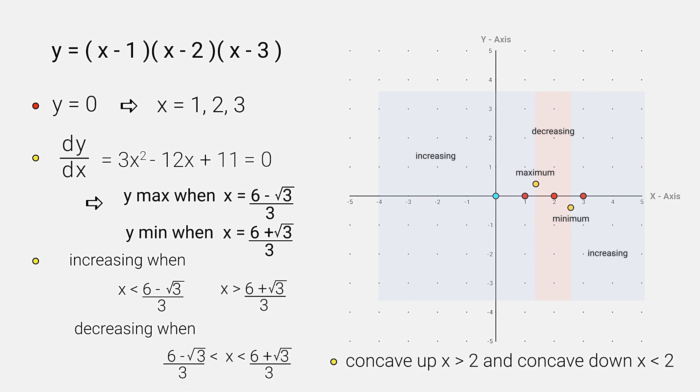When x is greater than 2, then y is concave upward. When x is less than 2, y is concave downward.